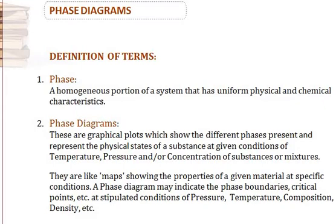Unlike the simple case where we just mentioned the liquid, vapor, and gas phase, in more complex cases we could have phases such as alpha phase, beta phase, alpha plus beta phase, and so forth. A very important method used to understand the number of phases present in any system is the use of phase diagrams, which are graphical plots that show the different phases present and represent the physical states of a substance or system at given conditions.